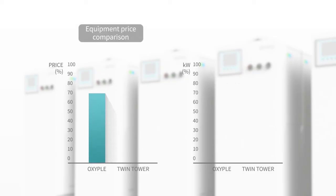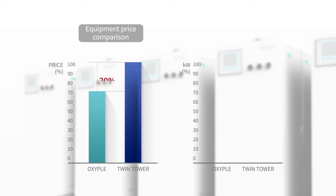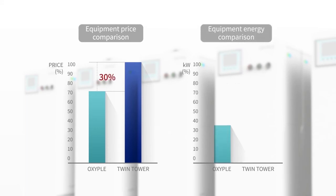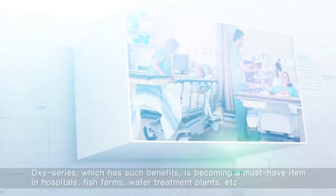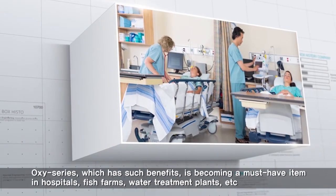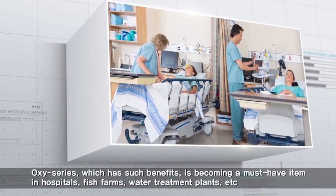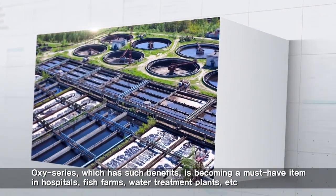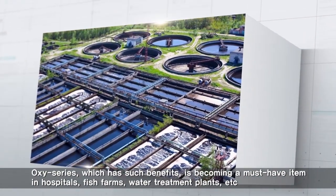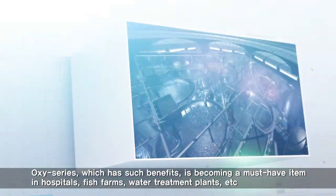Using a compressor with lower pressure compared to similar products can reduce initial construction cost by up to 30 percent and operation cost by up to 35 percent. The Oxy series, with such benefits, is becoming a must-have item in hospitals, fish farms, water treatment plants, and more.